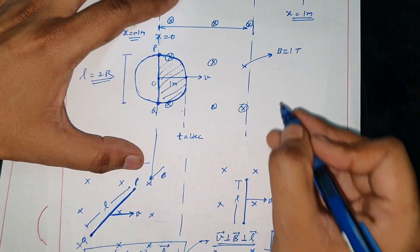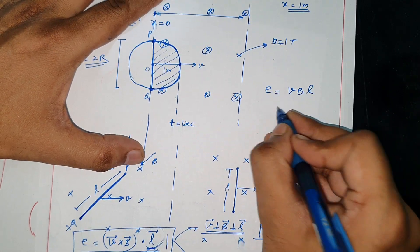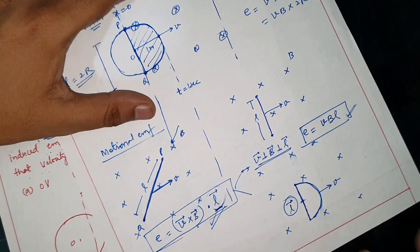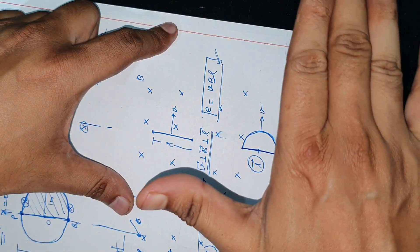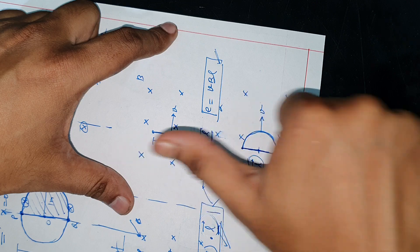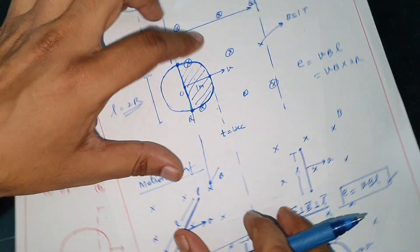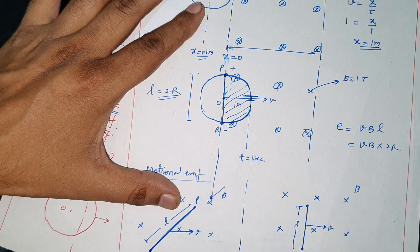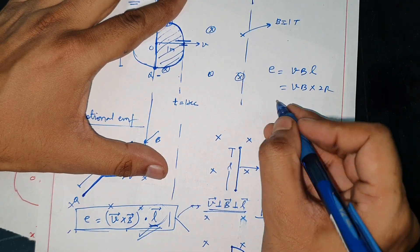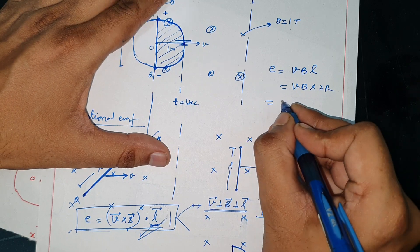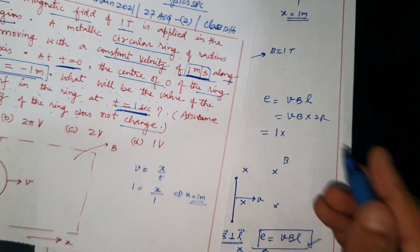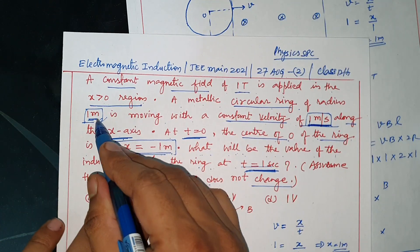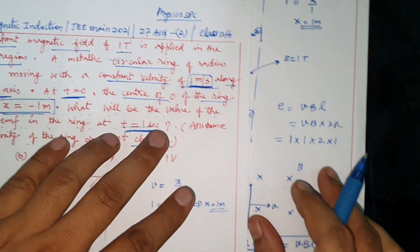The length of this is L, two times of radius. So induced EMF = VBL = VB into 2R. If we want to see which end is higher and which end is lower, then we can know V cross B. This end is positive, this end is negative. 1 meter per second into 1 tesla into 2 times 1 meter. This is 2 volts.